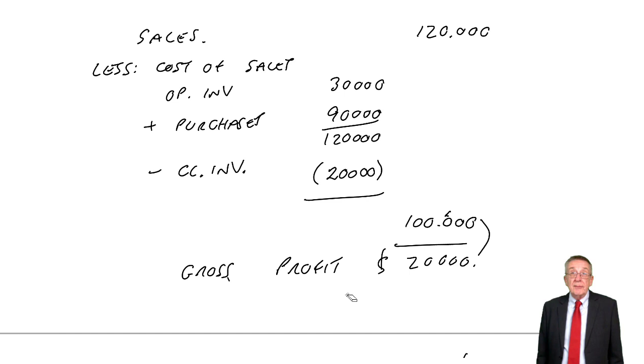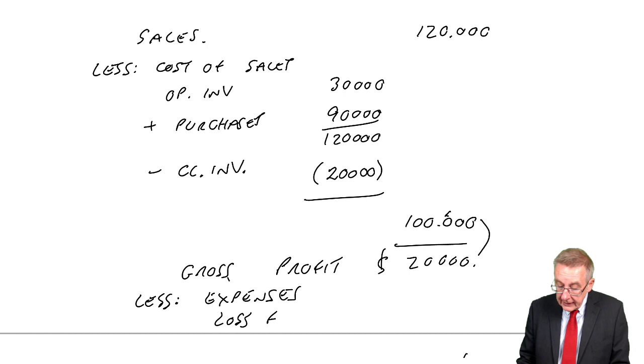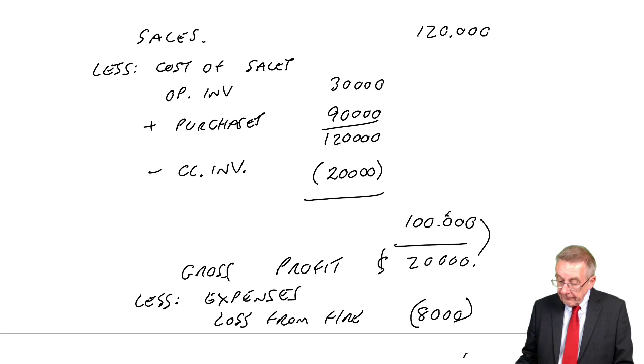However, losing stuff in a fire does cost us money, obviously. The final profit is going to be lower. But we'd show that separately under expenses. Along with all the other expenses as normal, rent, electricity, etc. You'd have loss from fire, 8,000. And if there were no other expenses, the final profit would end up only being 12.